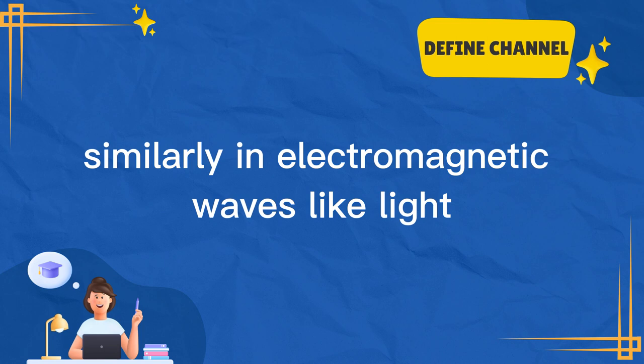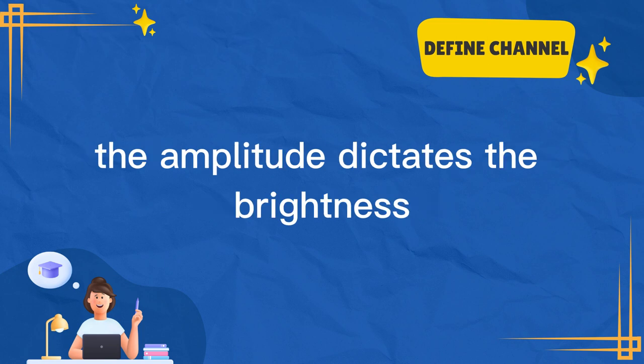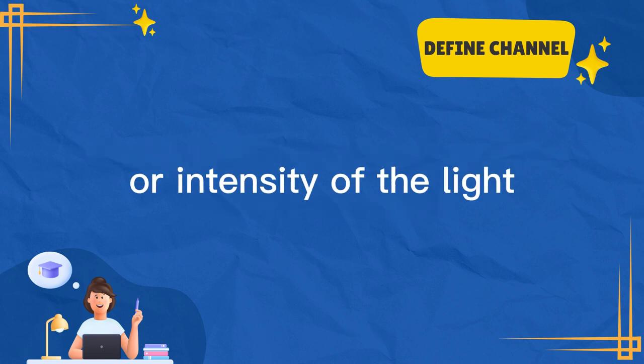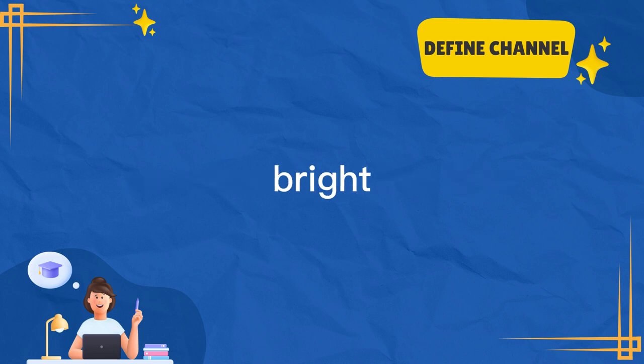Similarly, in electromagnetic waves like light, the amplitude dictates the brightness or intensity of the light. Bright, vibrant colors stem from waves with greater amplitudes.